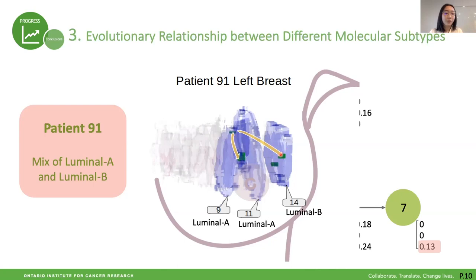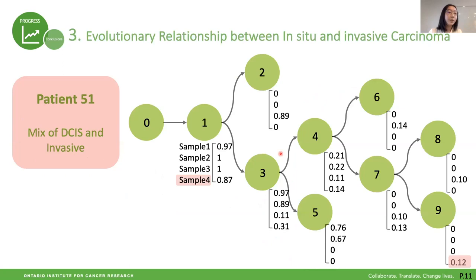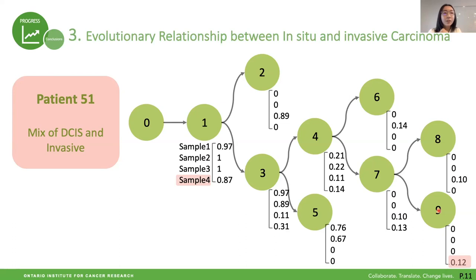Another patient I would like to show is patient 51, who has a mixture of in situ and invasive carcinoma. This follows the same approach as the previous slides, but we have four samples instead of three. Two conclusions: first, in situ and invasive carcinoma shared a common ancestor; second, in situ carcinoma actually has a parallel branching pattern with invasive carcinoma, though we are not yet sure whether in situ came after the invasive or is just rapidly evolving by itself. We have designed several other experiments to validate this hypothesis.